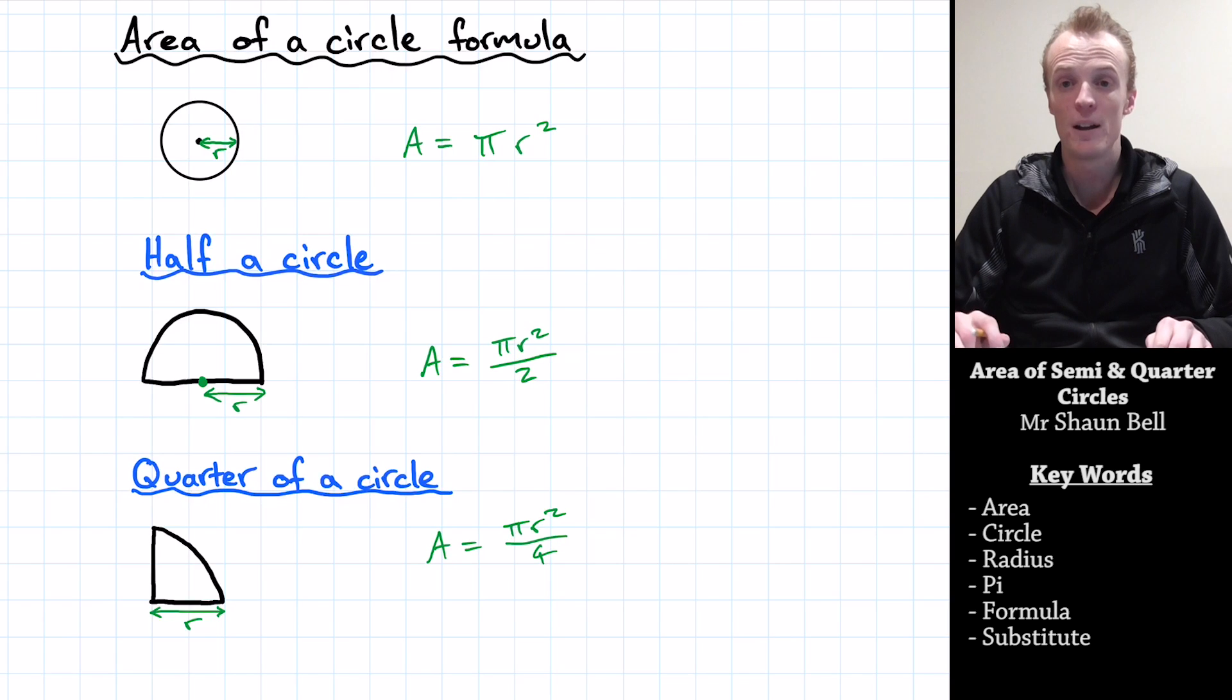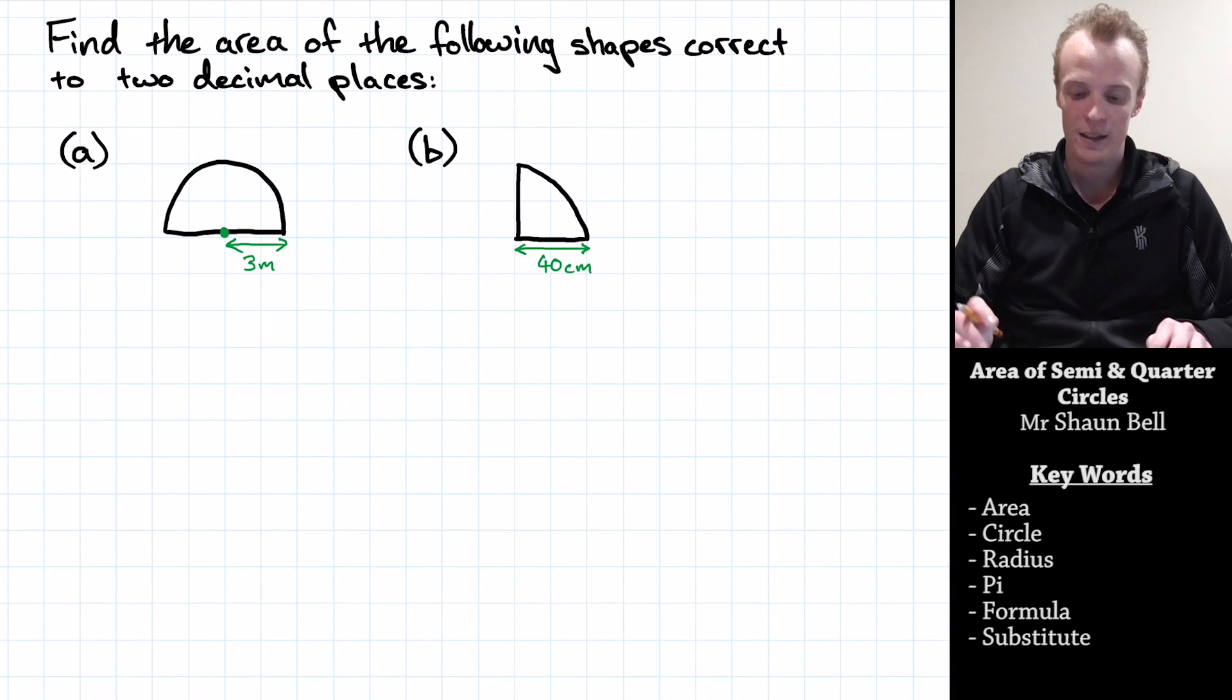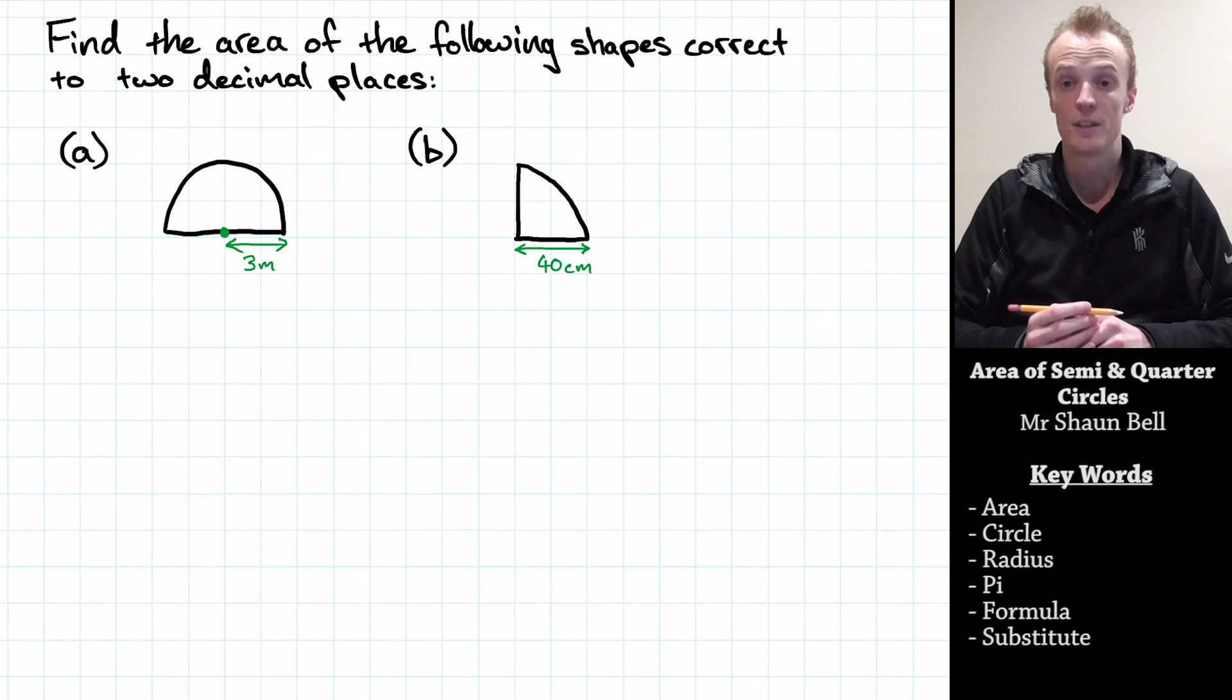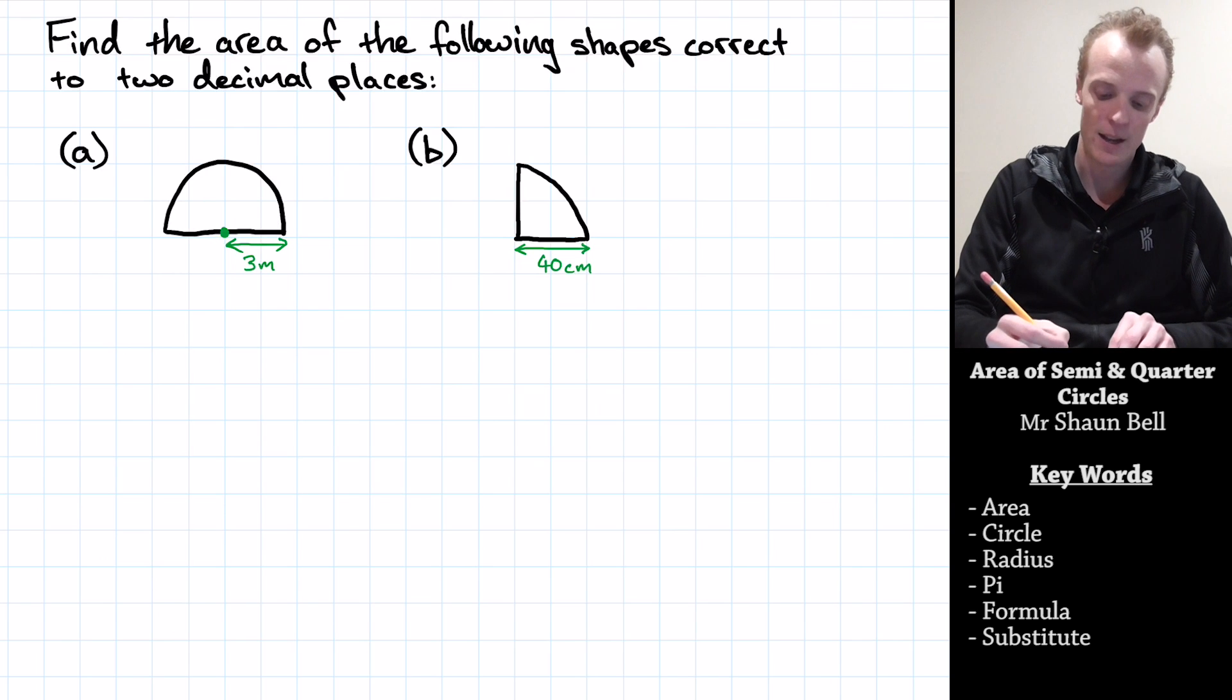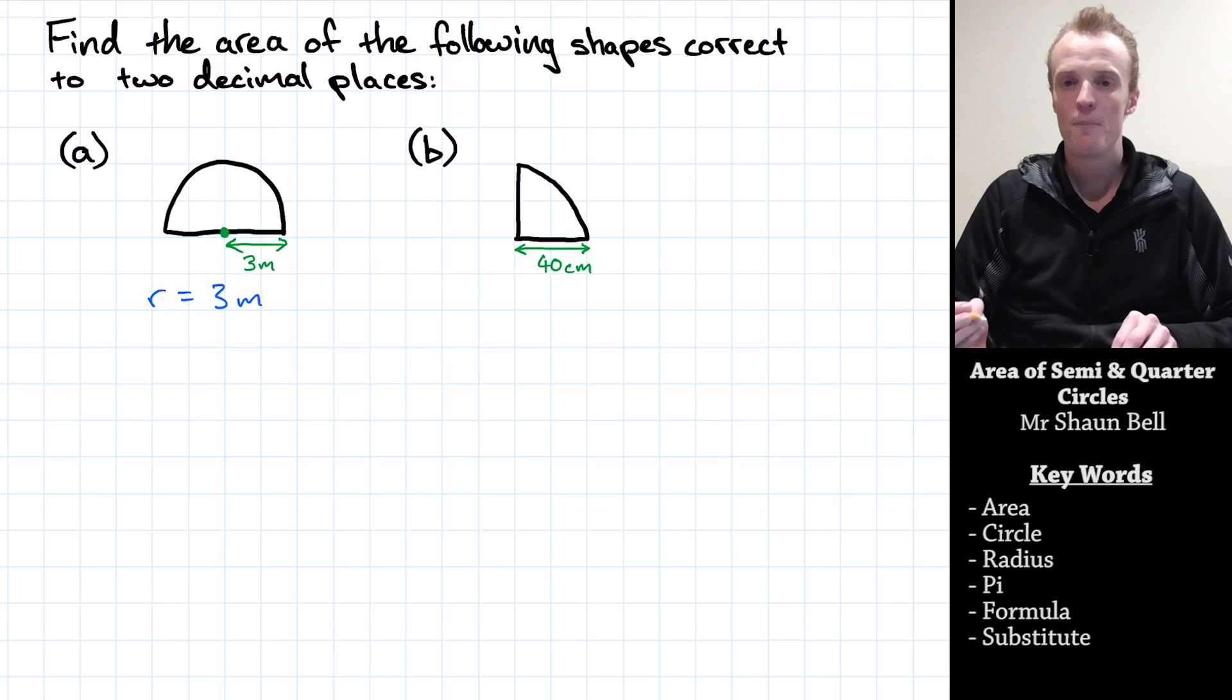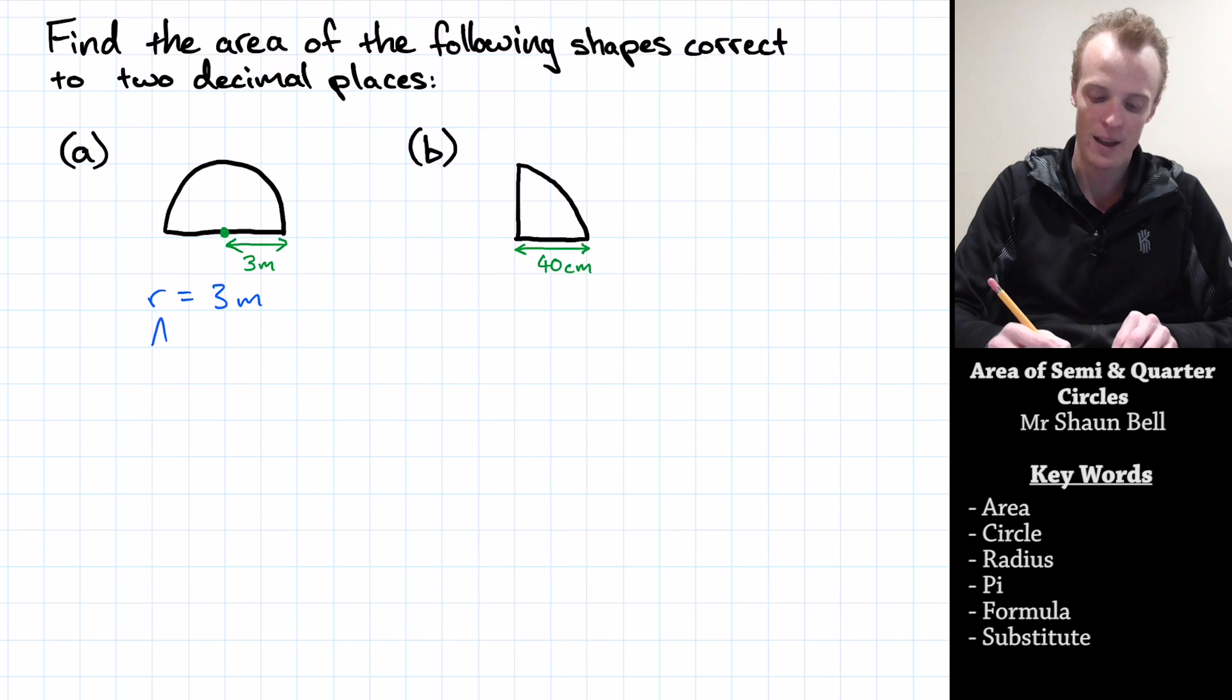So let's take a look at how we might do this with a problem. Let's say I've got the following half a circle, and I want to know the area of this half a circle. Well, I always start by recording what information I've been given. In this case, I've been given the radius and the radius is equal to three metres.